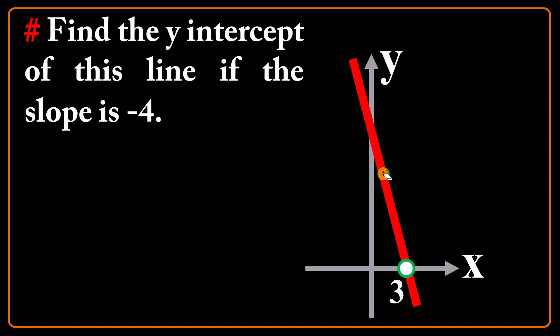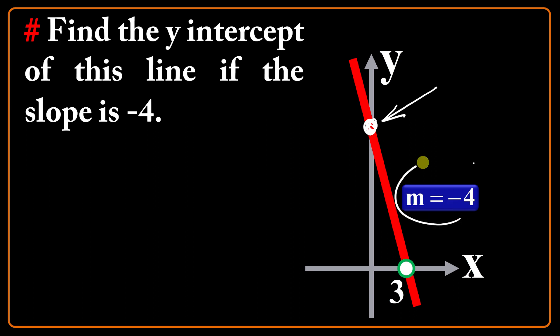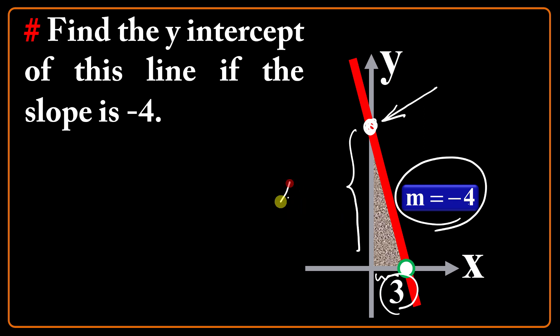Find the y-intercept of this line if the slope is negative 4. Y-intercept is what I'm looking for. I establish a triangle and confirm that the absolute value of the slope is 4 — absolute value is enough. So height over base equals 4. Base is 3, so height will be 4 times 3, which equals 12. So the vertical intercept is 12.